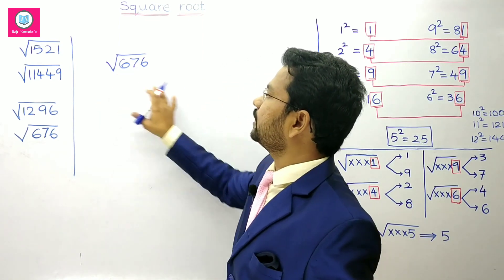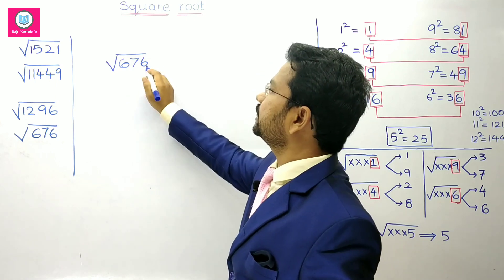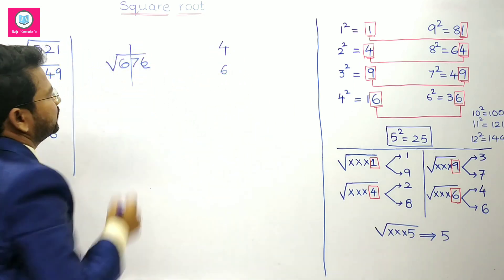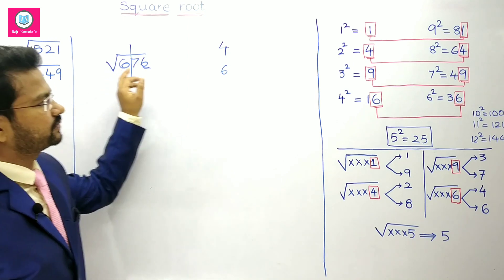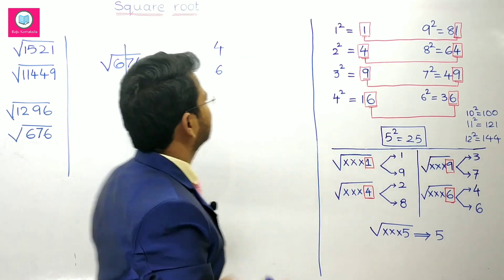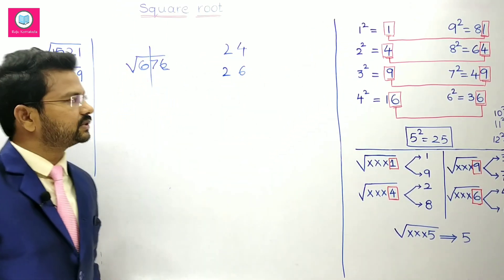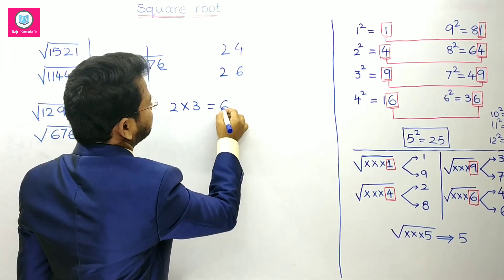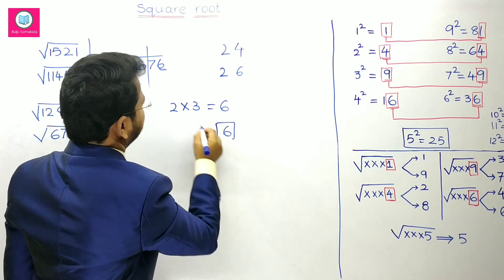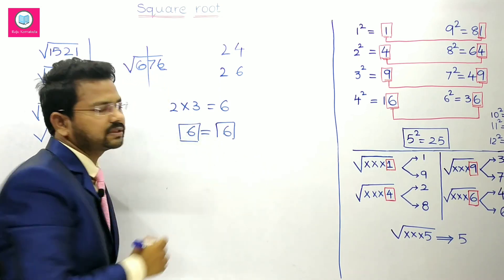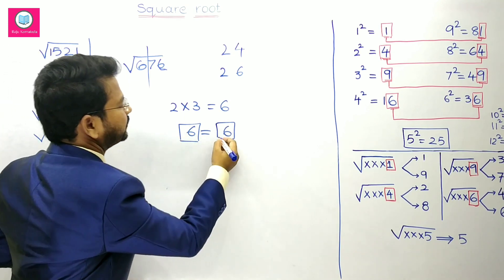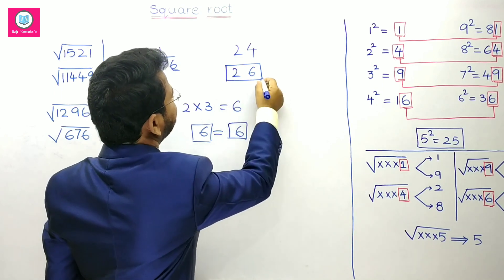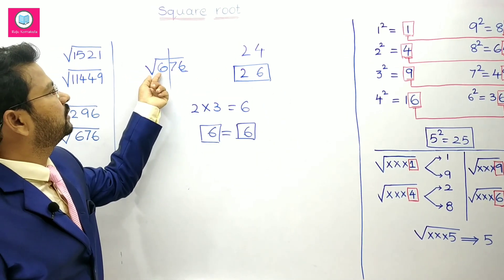One more example where the product and root number are equal: square root of 676. The number ends with 6, so it may be 4 squared or 6 squared. Leave 2 digits and consider 6. The nearest smaller perfect square to 6 is 4, which is 2 squared, so we take 2. Candidates are 24 or 26. Multiply 2 by next number 3: 2 into 3 is 6. Compare 6 and 6 — they are equal — so take the greater number, which is 26. Therefore 26 is the square root of 676.